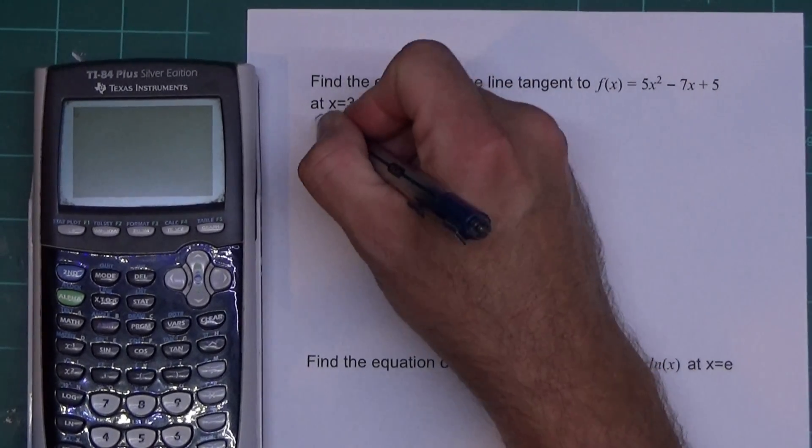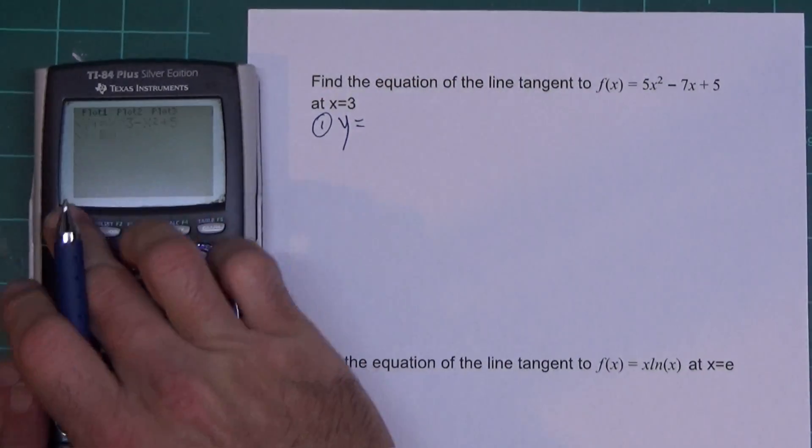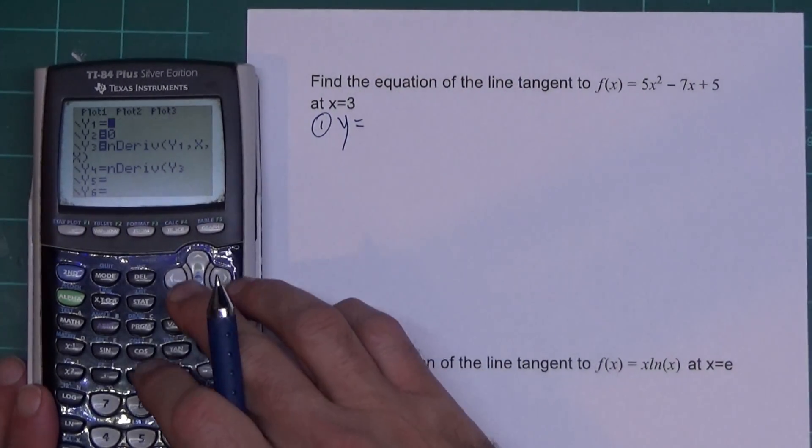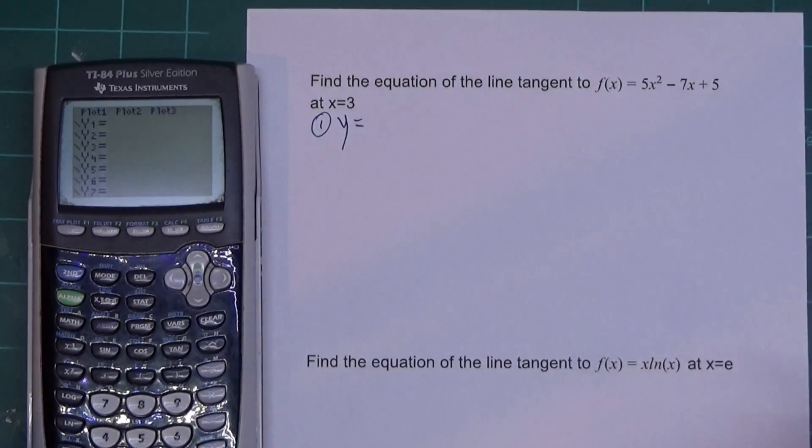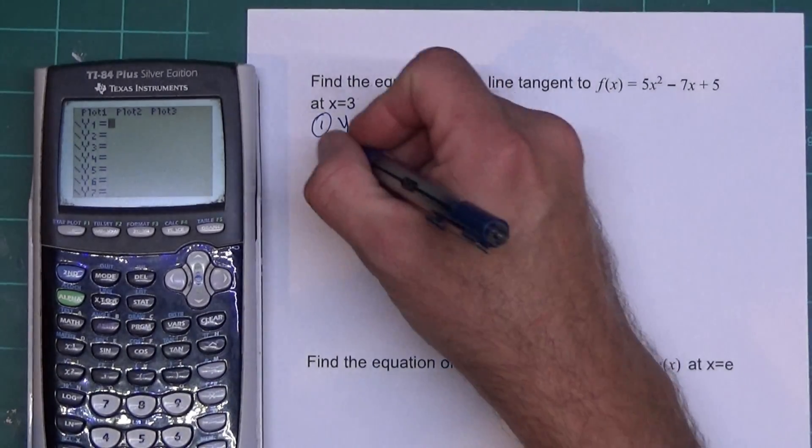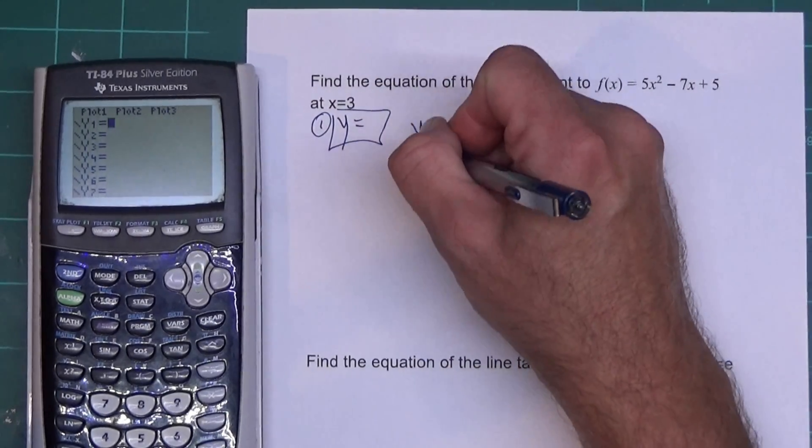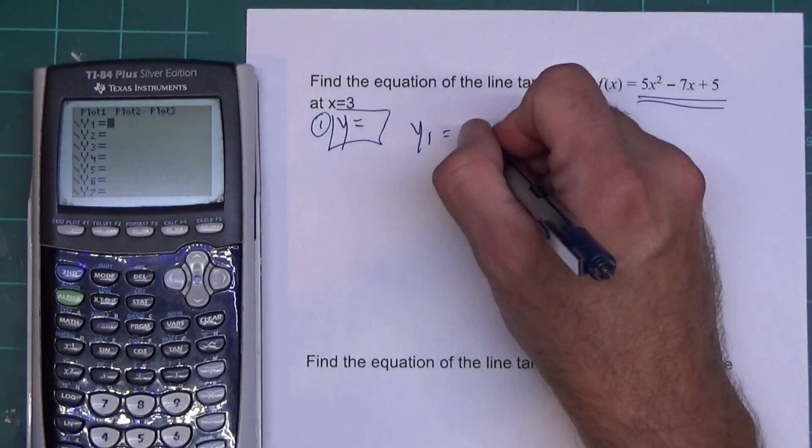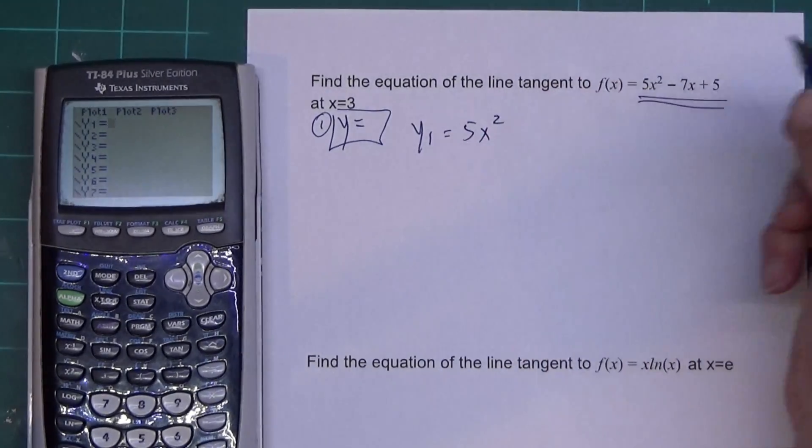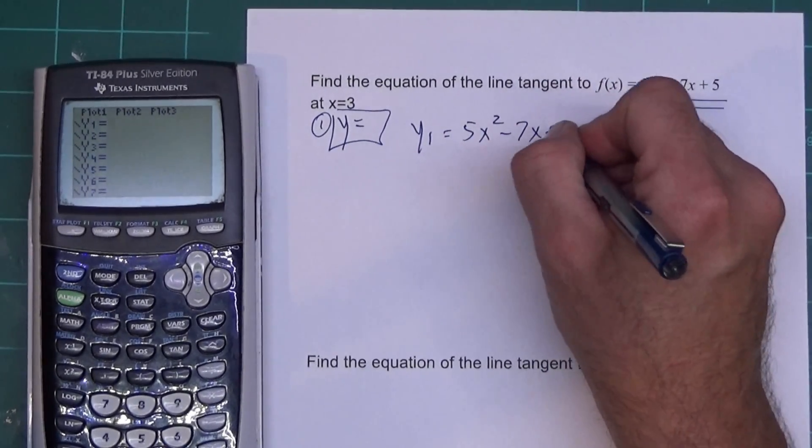First thing you want to do is press Y equals. So I'm going to press the Y equals button up here. I'm going to clear that. I'm going to go ahead and clear all these. So I'm going to go up to Y1. In Y1, I'm going to put this equation over here. So I'm going to hit 5x squared minus 7x plus 5.